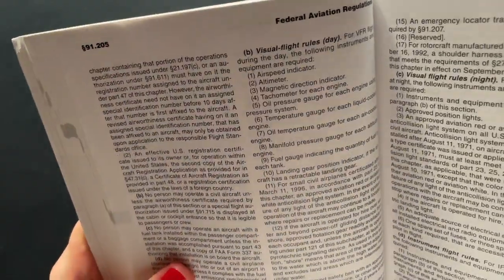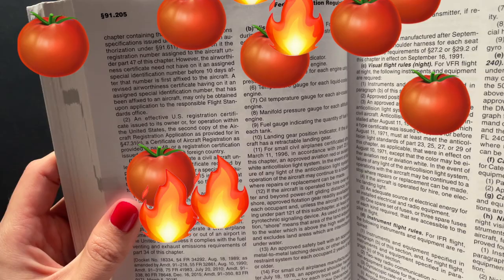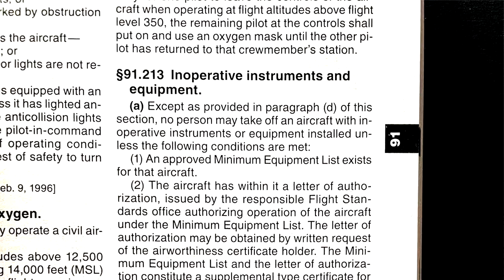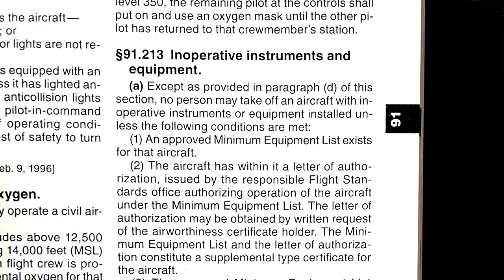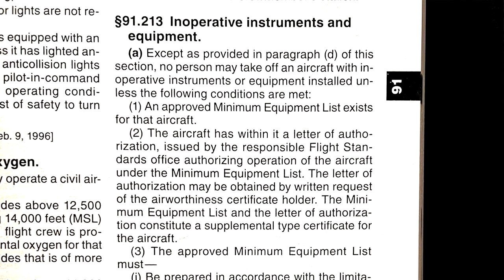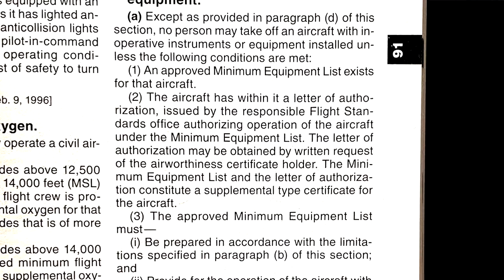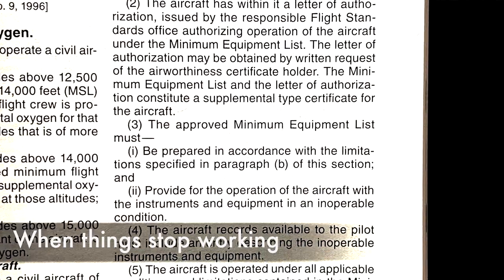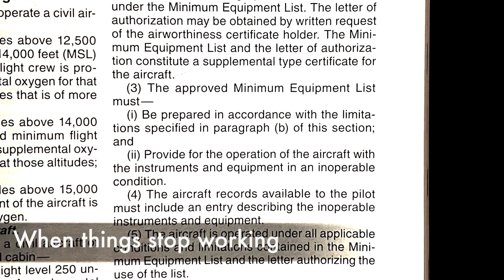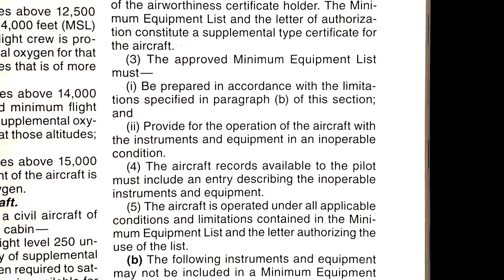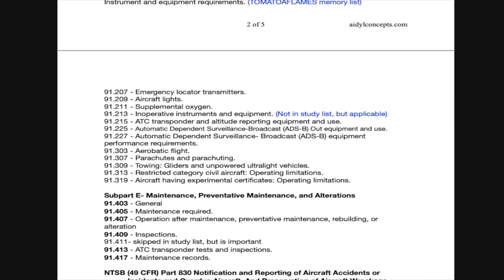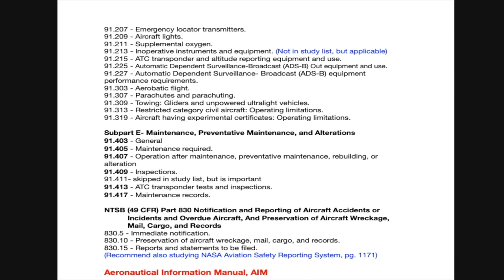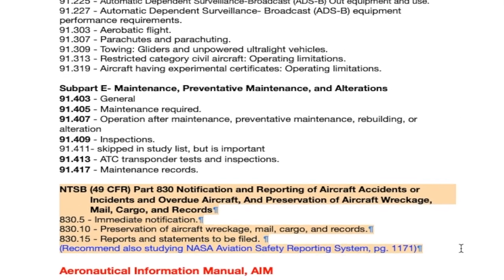Next is 91.205 — the TOMATO A FLAMES list of required equipment. The flaming tomatoes are all present, just disassembled and out of order in the list. I also added 91.213, another one not included in the suggested study list — things stop working from time to time, and here is where you will read about minimum equipment lists, deactivating and placarding inoperative equipment, and so on.